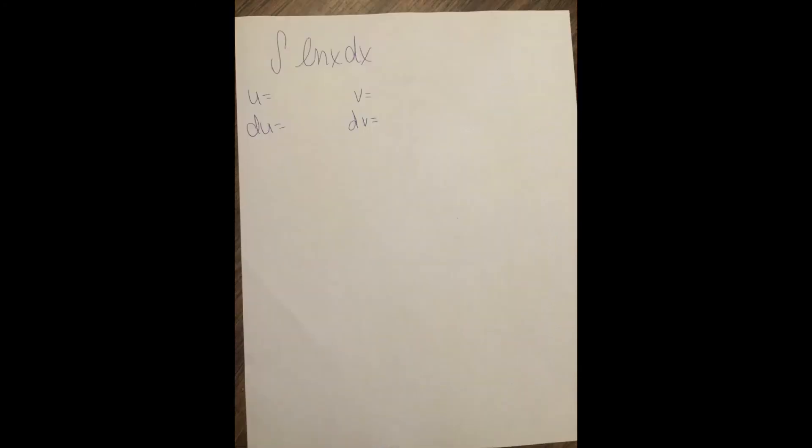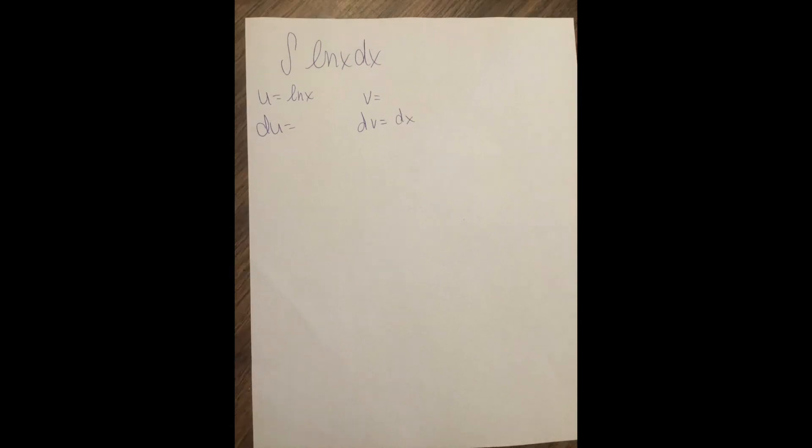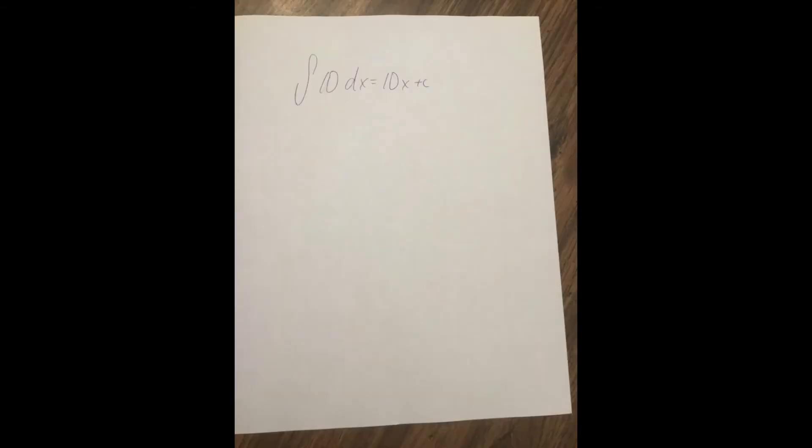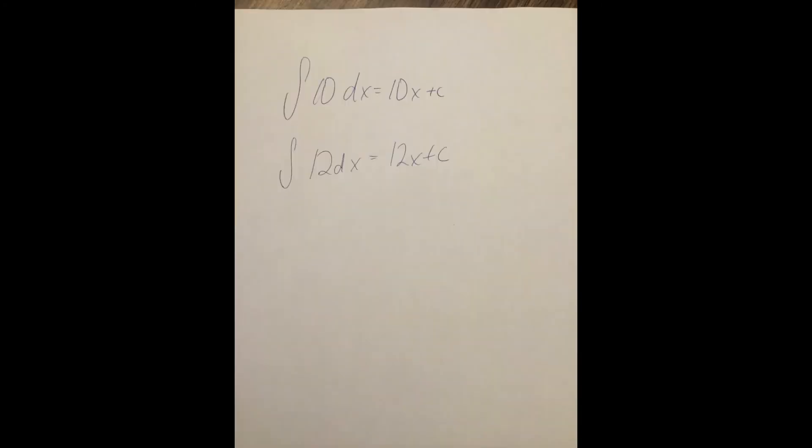Here we're going to do the integral of ln of x, and we can do it because of using integration by parts. Now remember, ln of x has to be u because we don't know its antiderivative. Here finding v might be a tricky thing, so we're going to take a little side note and remember these nice little antiderivative rules.